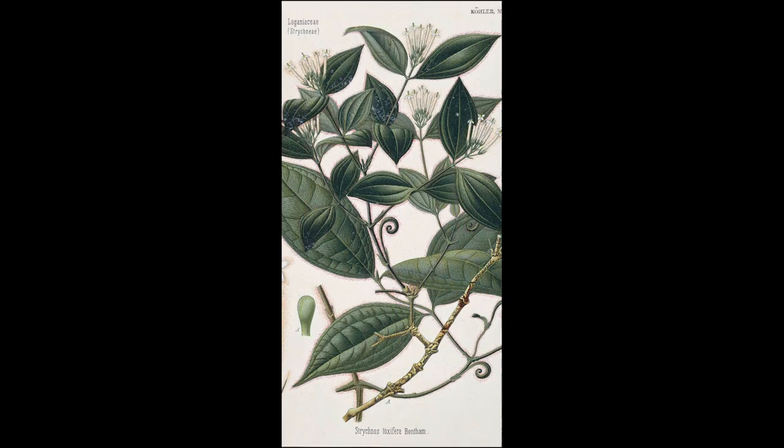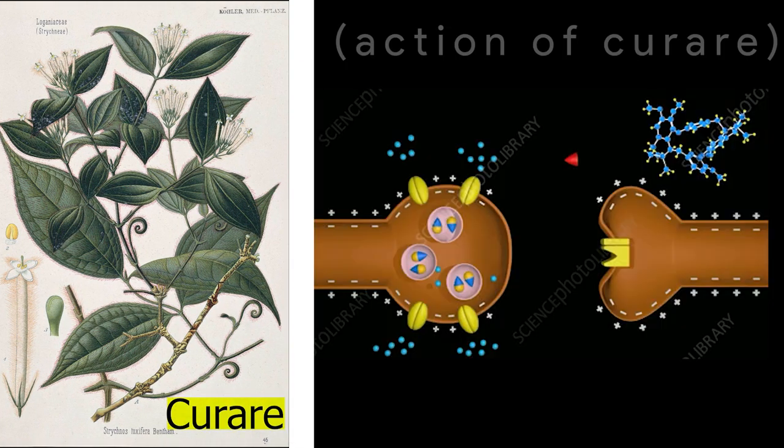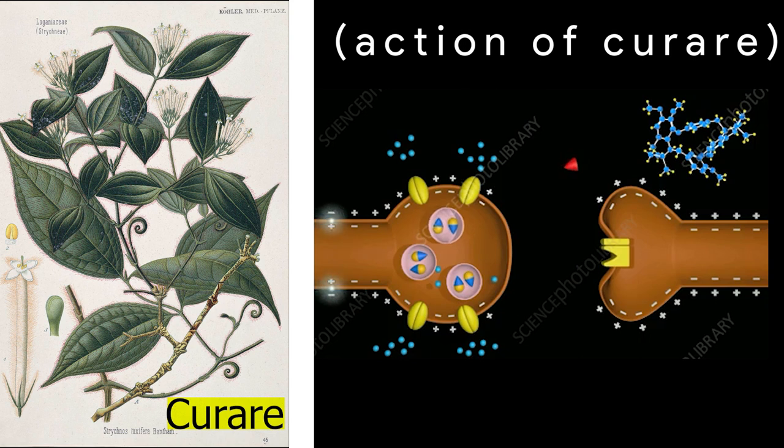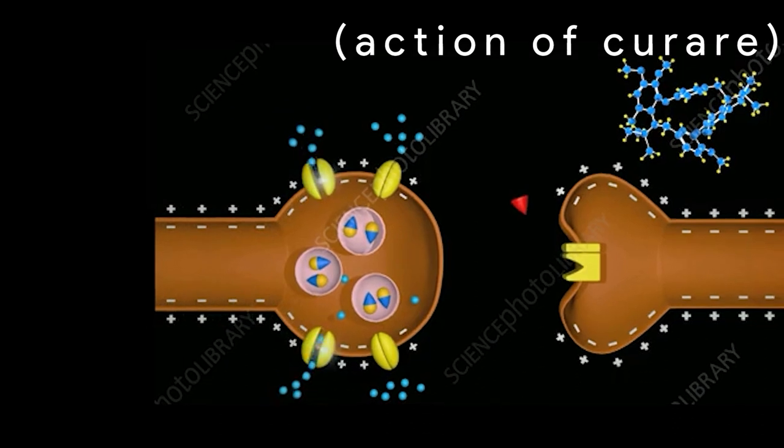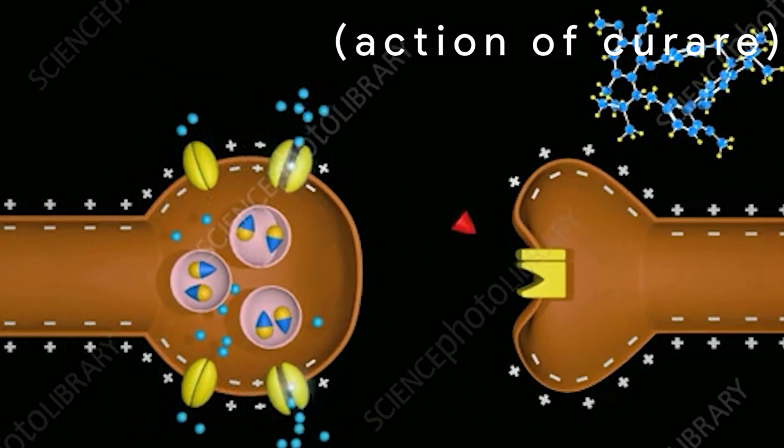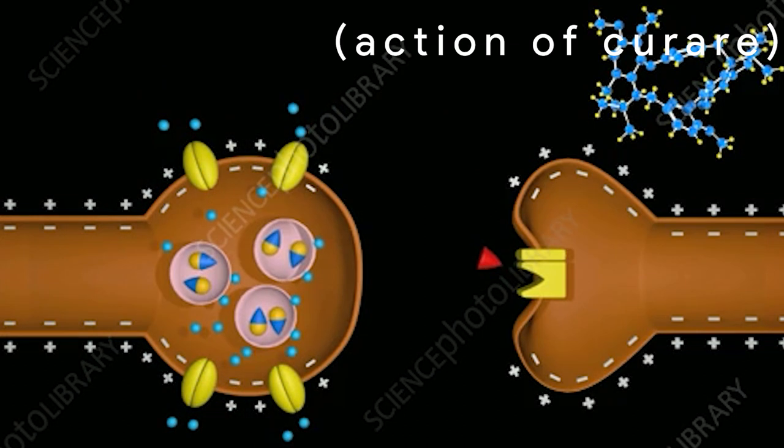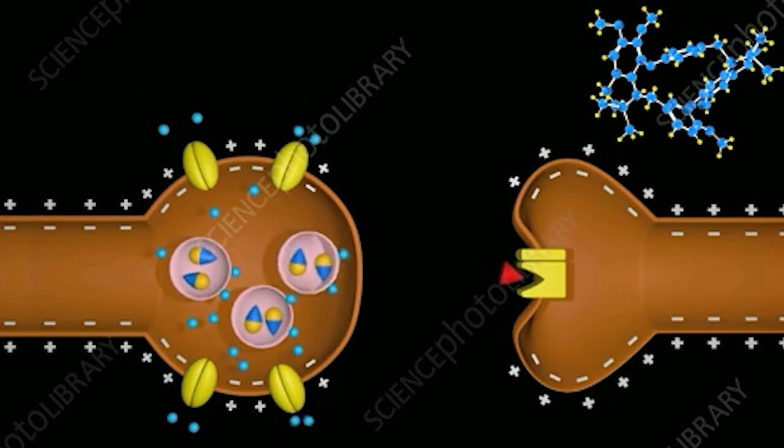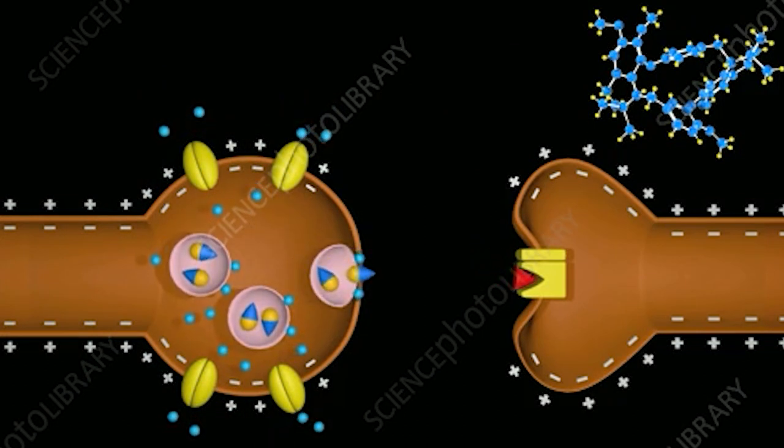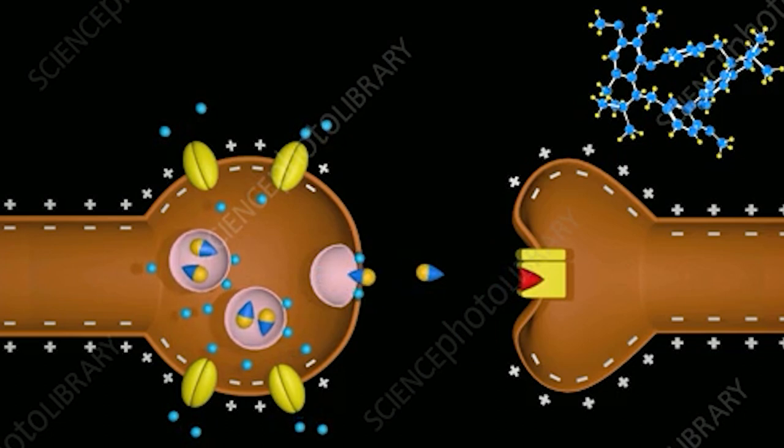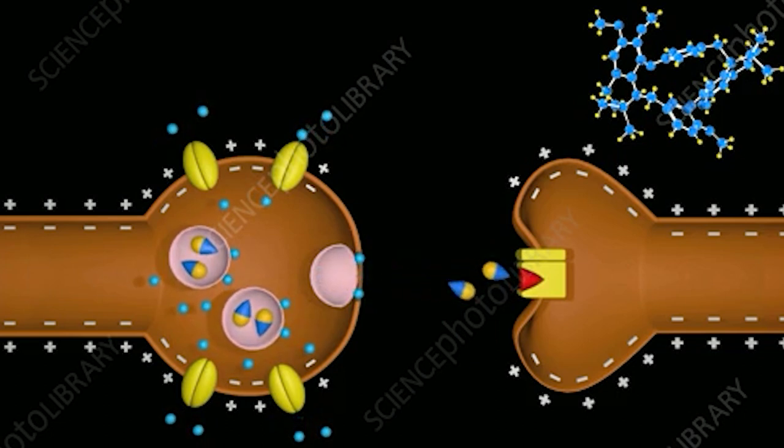He infected the fish with curare, a poison that blocks the junctions connecting nerves and muscles. And when he brought the eel near it, he found that no change happened to the fish. It didn't die, nor its muscles paralyzed. That means the eel directly attacks the nervous system instead of muscles. This was an amazing outcome. It does not attack on the muscles, but directly blocks the nervous system connecting the muscles.